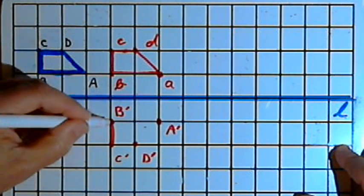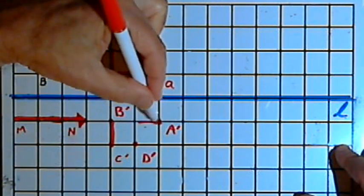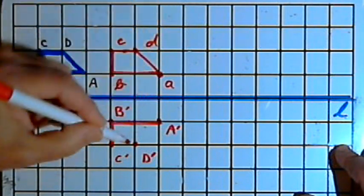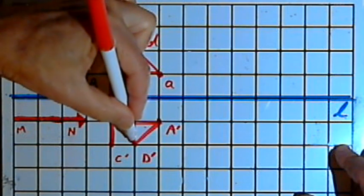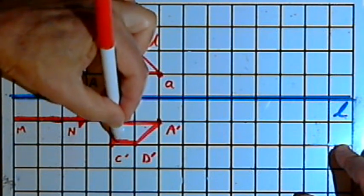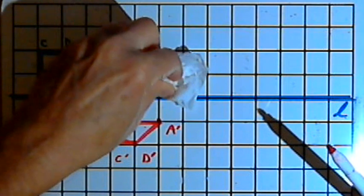And now I'll connect these points, and that will give me an image that was translated and then reflected. And I'll get rid of this intermediate image, the small a, small b, small c, small d.